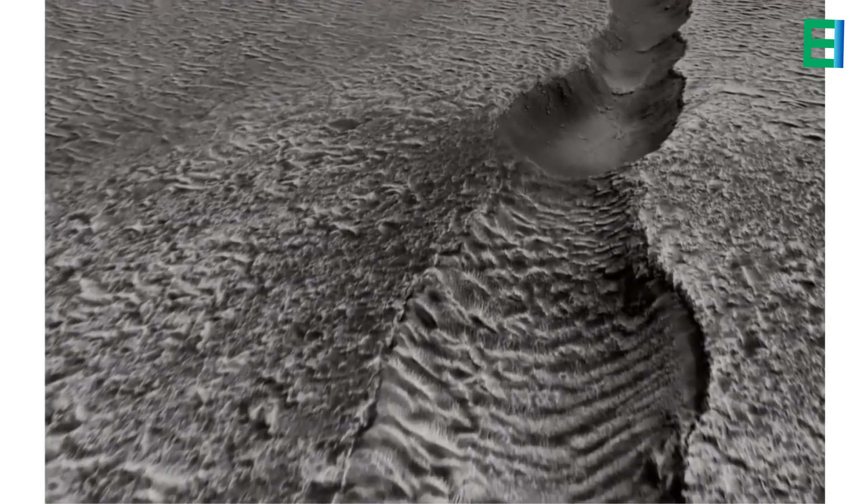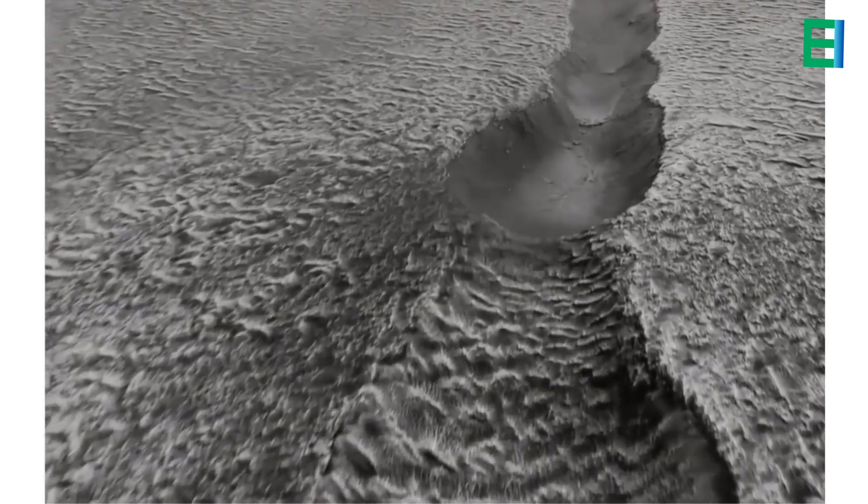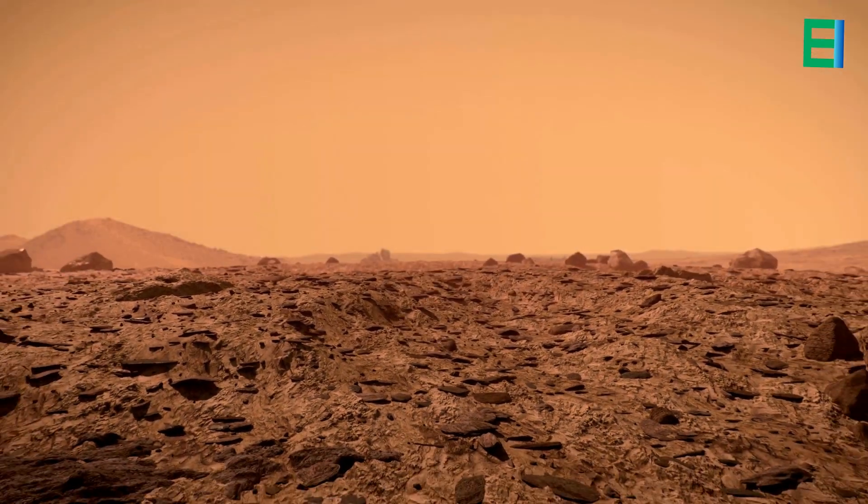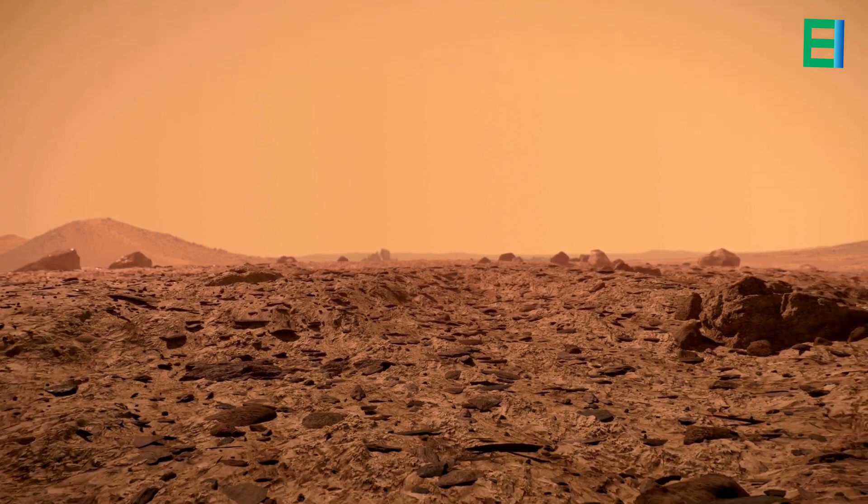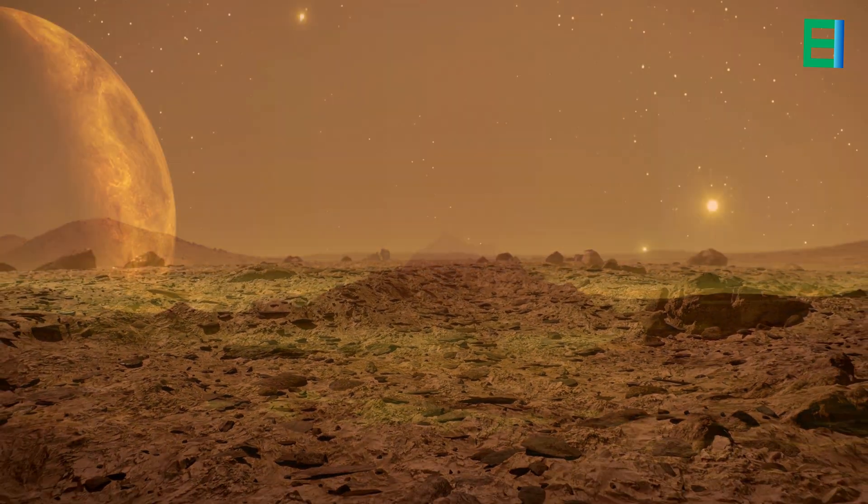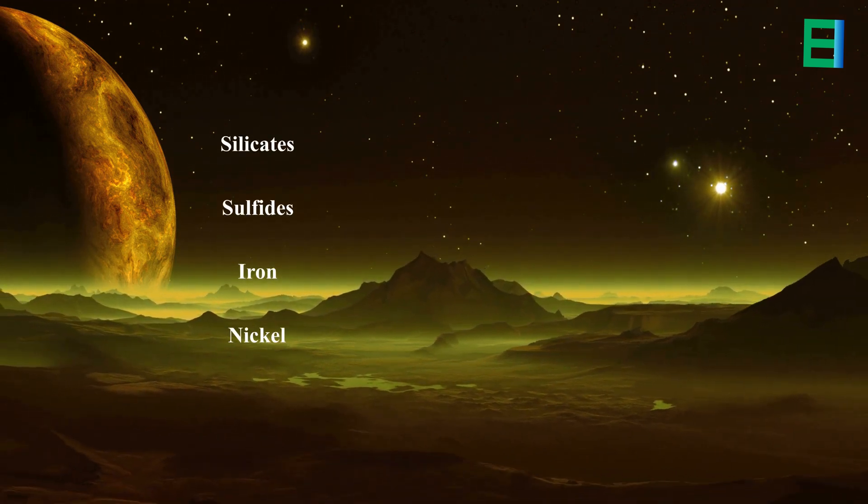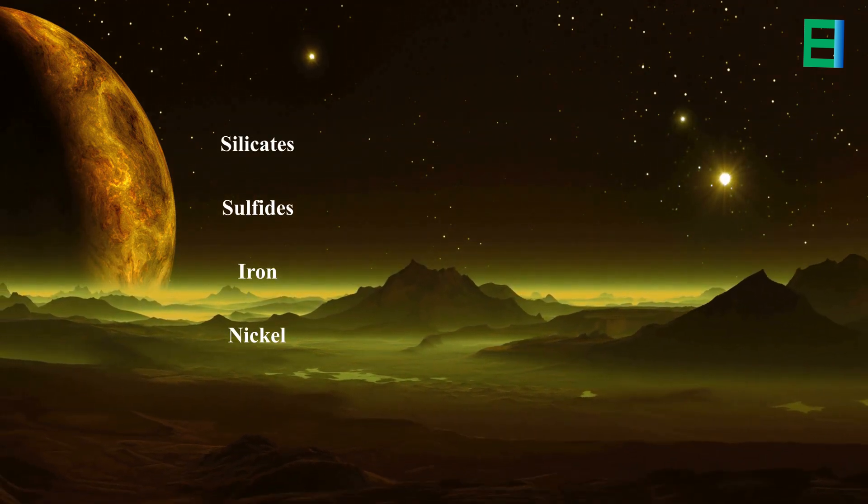Mercury's surface composition is predominantly made up of rocky materials. Observations from spacecraft missions have detected various minerals and elements, including silicates, sulfides, and metals like iron and nickel. These elements are believed to be remnants from the planet's formation and subsequent differentiating processes.